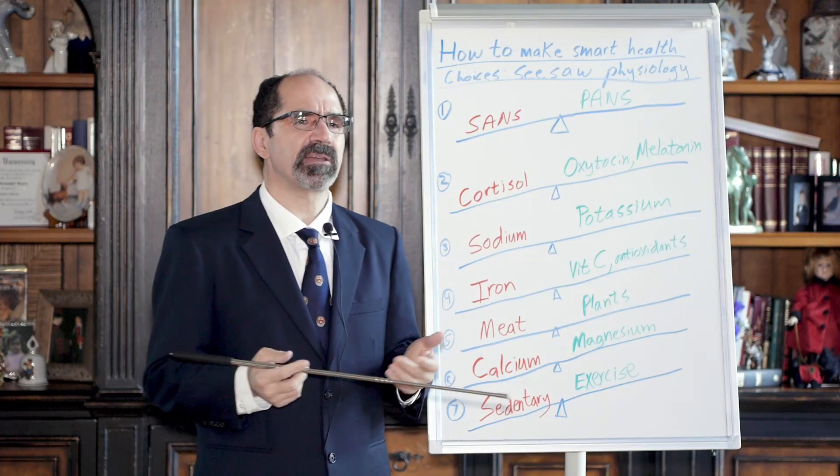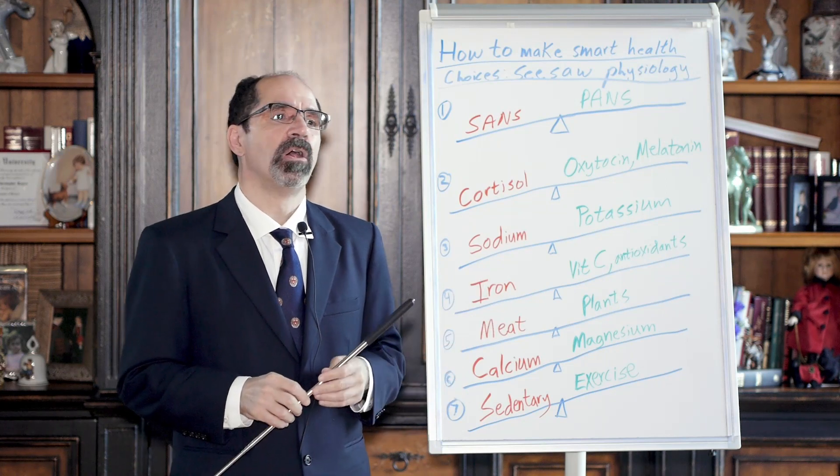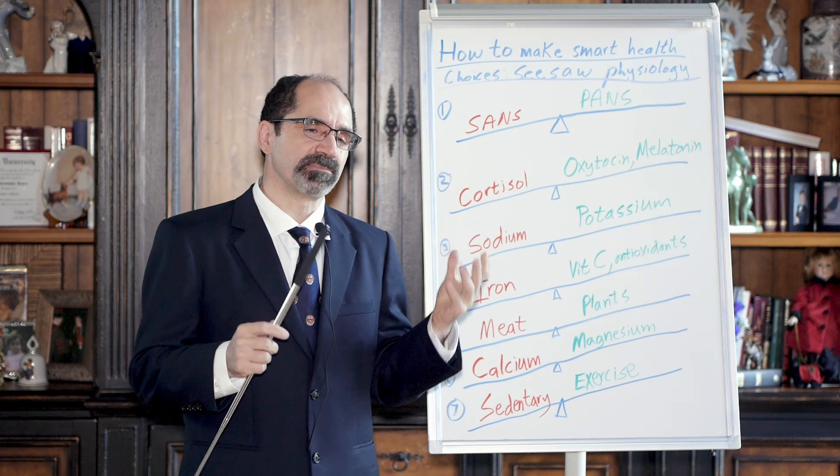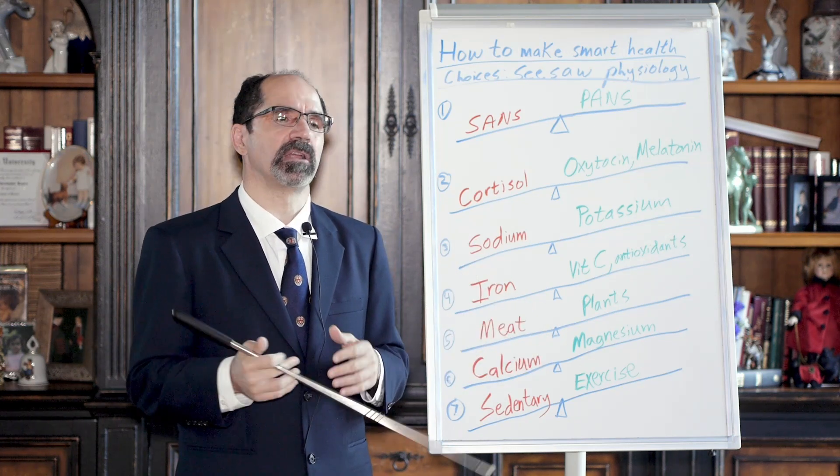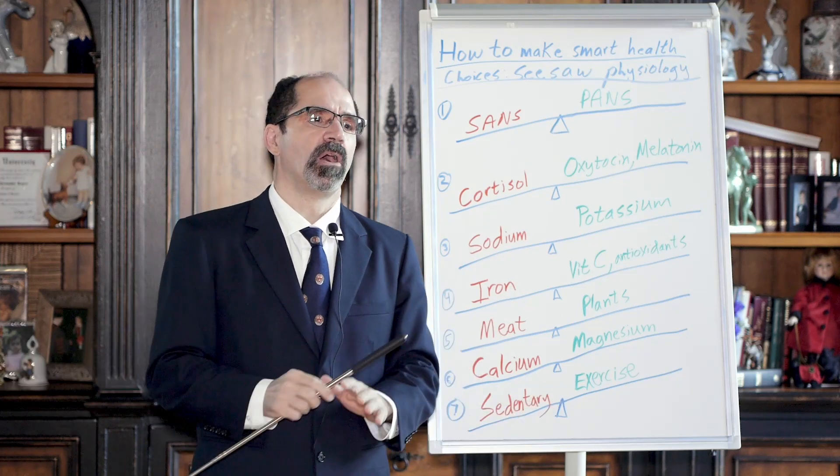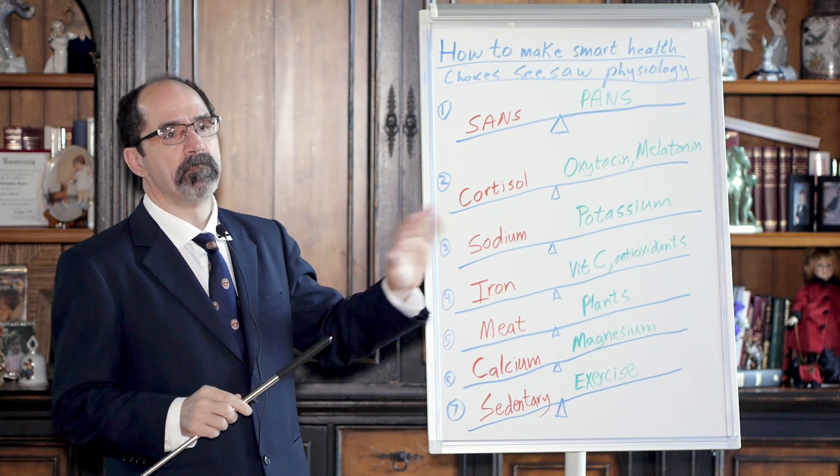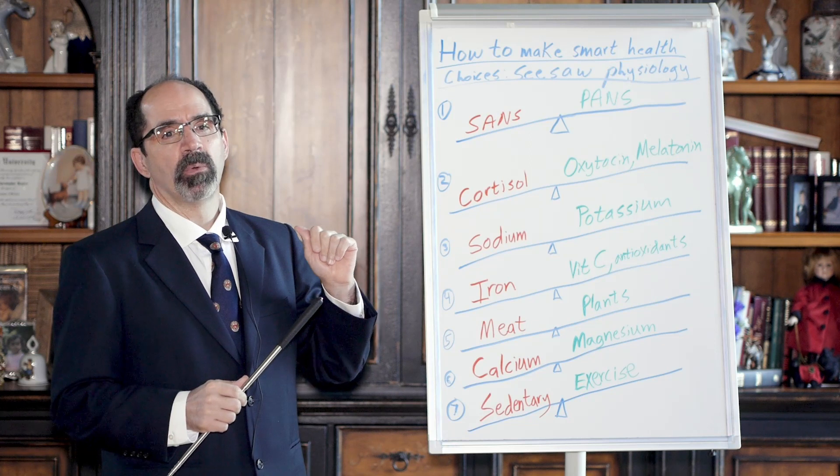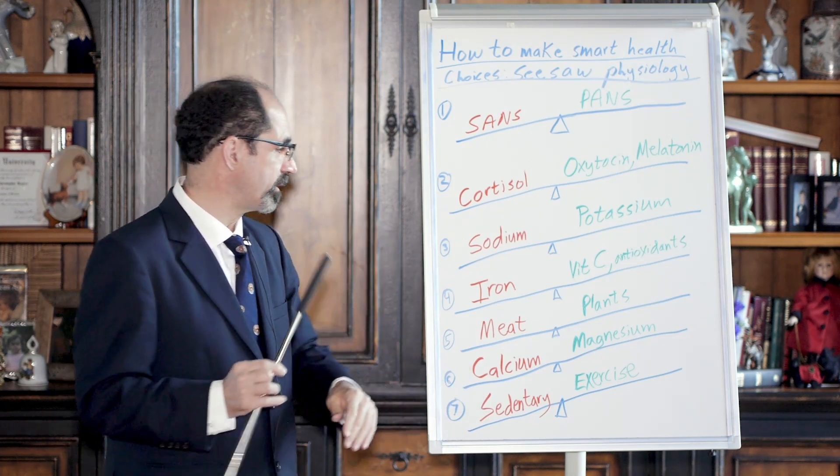Iron is something we tend to be overloaded on in this country because people tend to eat too much meat. Also, they got to be careful they're not getting too much iron from, sometimes people are taking multivitamins that contain iron. It's a bad idea. You don't want to be taking iron unless you're really anemic and you're prescribed by your doctor that you need iron. The vast majority of Americans are overloaded in iron, especially men. Women start becoming overloaded in iron quite typically once they're postmenopausal because they're no longer menstruating. They don't lose that iron every month.